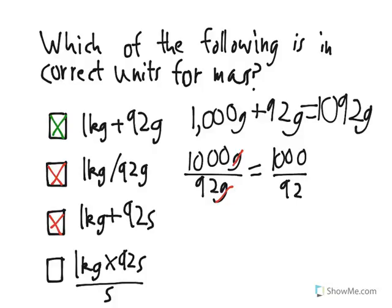And the final one's right, although it takes a little bit of thinking to see why. The seconds on the bottom cancels with the seconds on the top, leaving us just 1 kilogram times 92, which would be 92 kilograms. And because kilograms, like grams, is a measurement for mass, that's an acceptable answer.